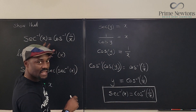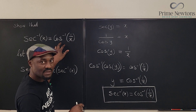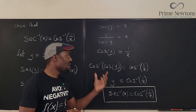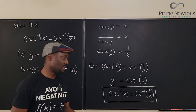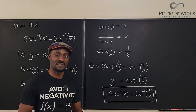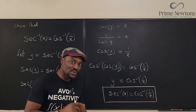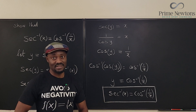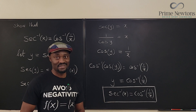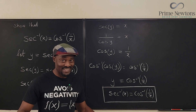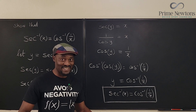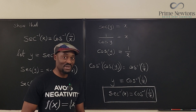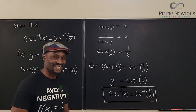Try to write this for inverse cosecant and inverse sine — follow this process and see if you get the same thing. Do the same thing for tangent and see if you get the same result. Whatever you do, never stop learning, because those who stop learning stop living. Bye!